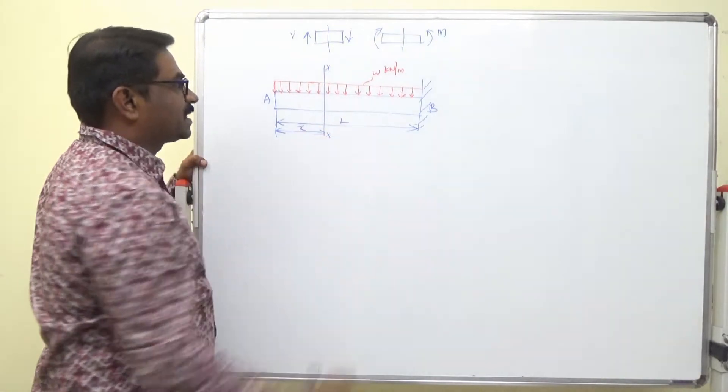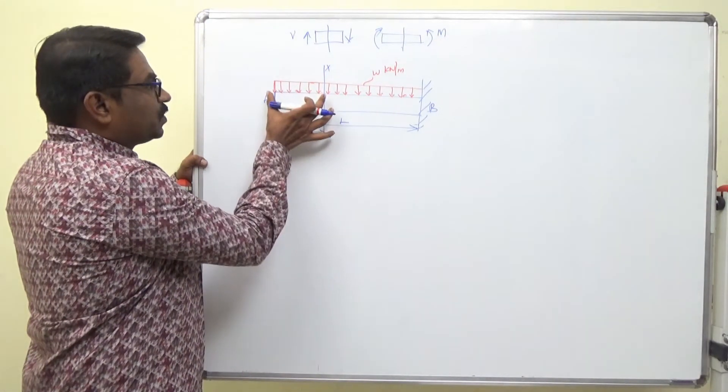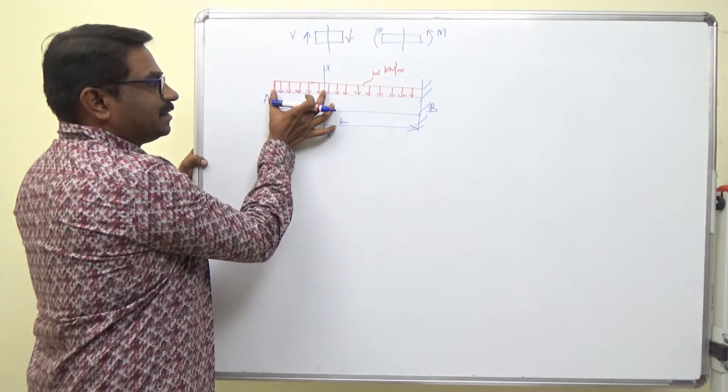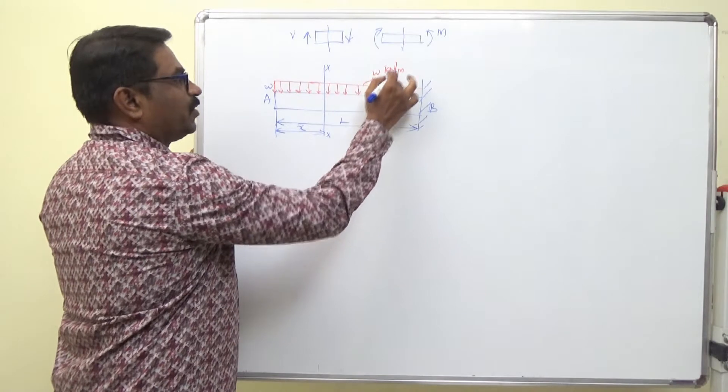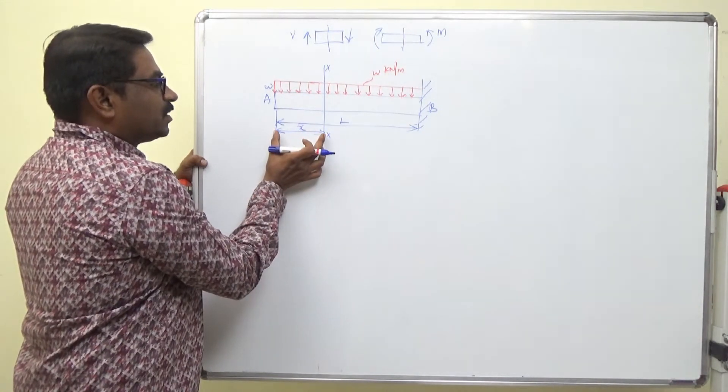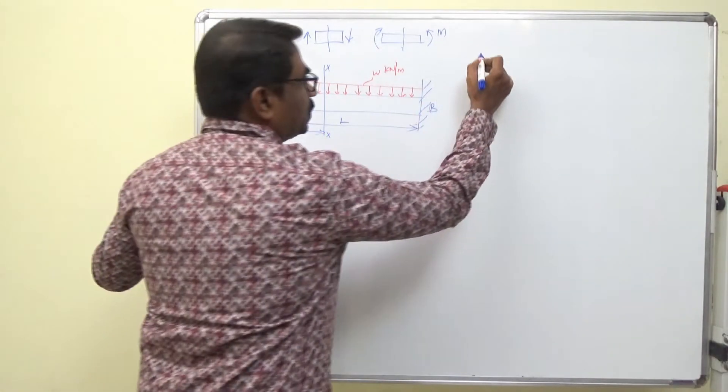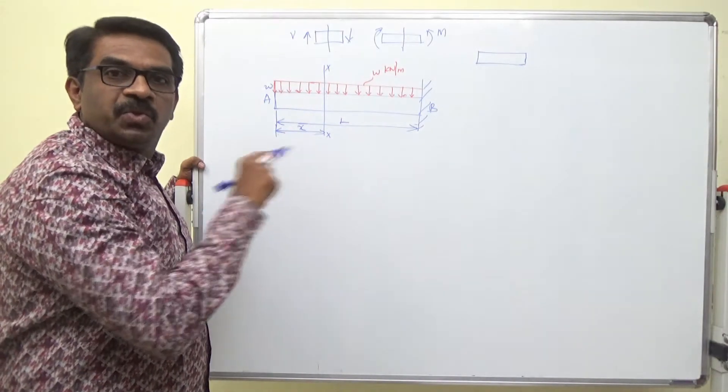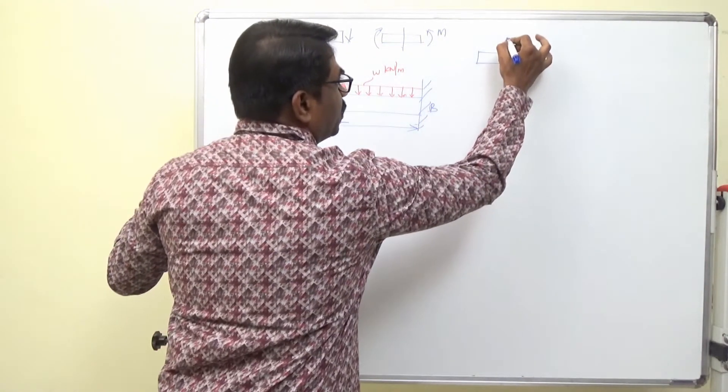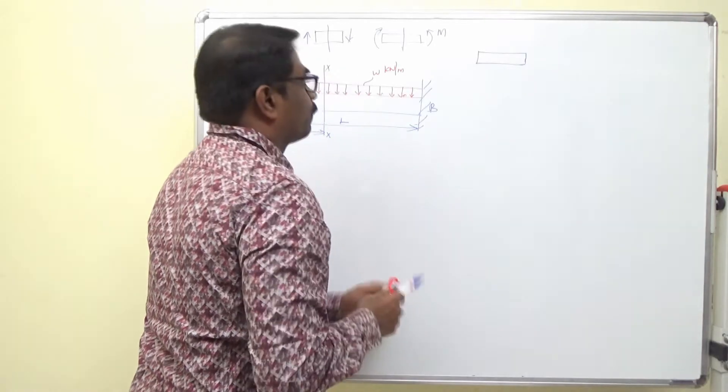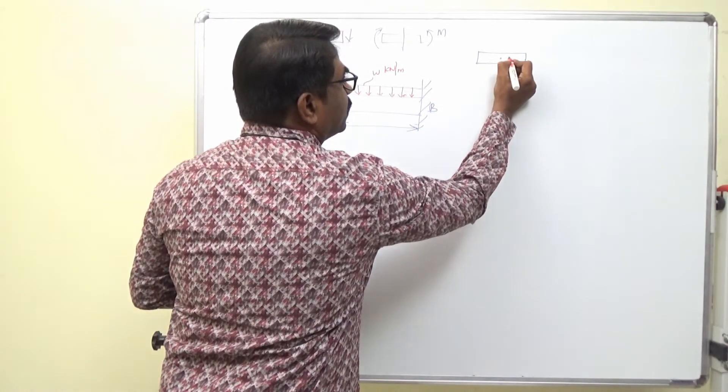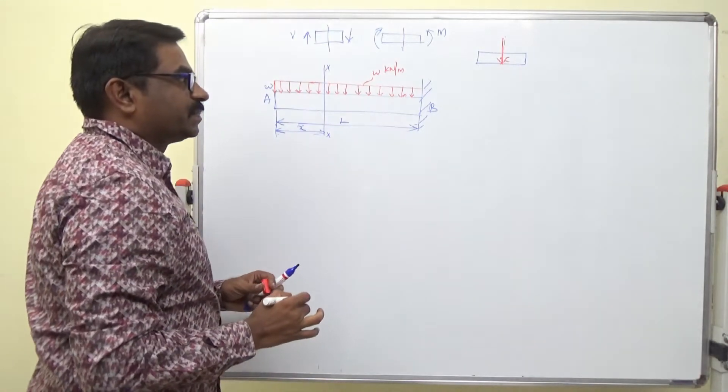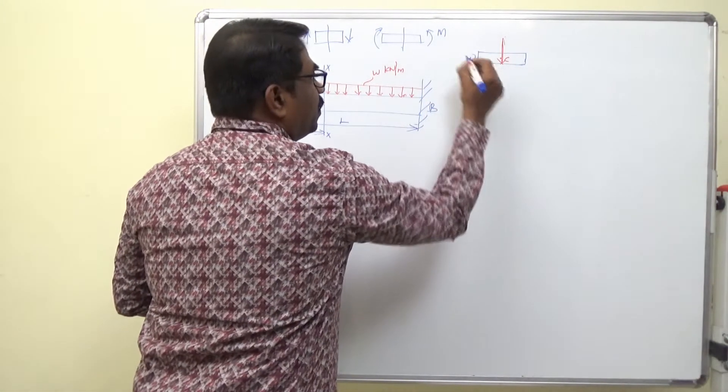This is the section I have passed. Now, to the section I have a uniformly distributed force like a rectangle. It is W kN per meter and to the length of x. How do we find out? How do we change the UDL into point load? The point load will be acting at the mid, that is through the centroid. This is the point load.